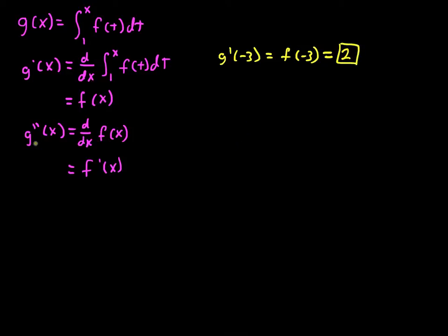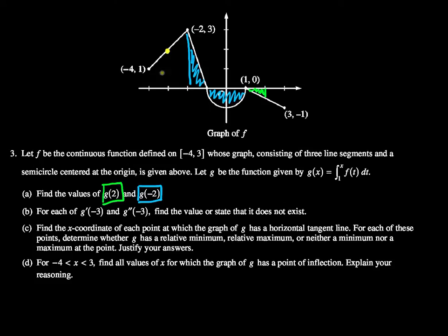Next we look and see this second derivative, g double prime of negative 3. And that's going to be the first derivative of f evaluated at negative 3, which is the tangent slope. But that's easy to figure out, because in this section, in this interval, f is linear.